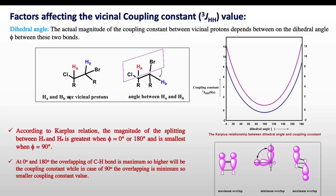First we will discuss about the dihedral angle — the angle between the two C-H bonds. The actual magnitude of the coupling constant between two vicinal protons HA and HB depends on the dihedral angle between these two C-H bonds. The angle between these two bonds affects the magnitude of the coupling constant, i.e., the 3J coupling.